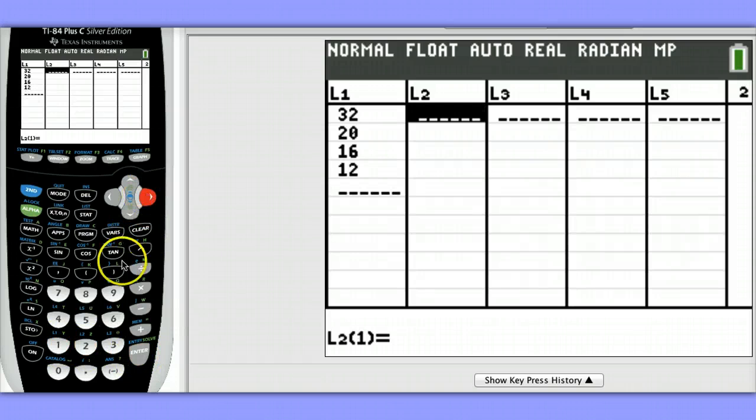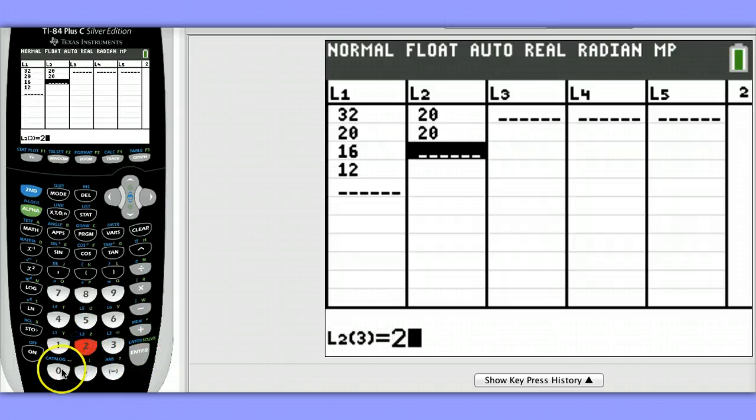In List 2, we enter our expected counts, and if the birthdays were evenly distributed, we'd expect there to be 20 birthdays in each set of three months.